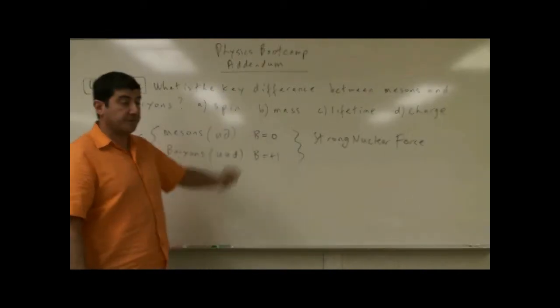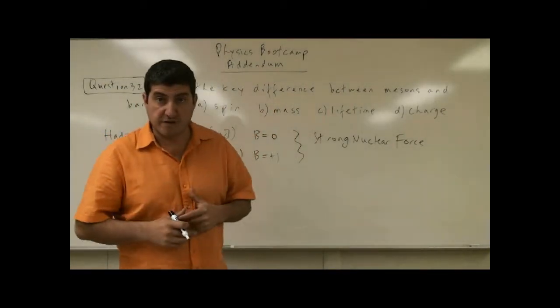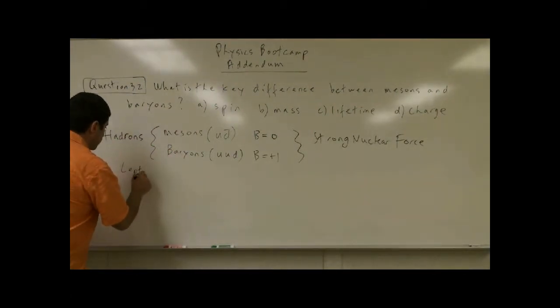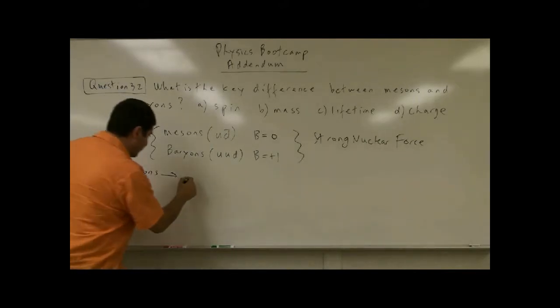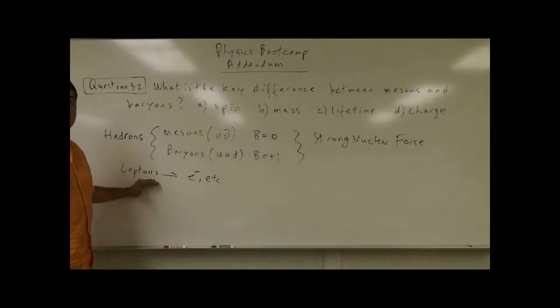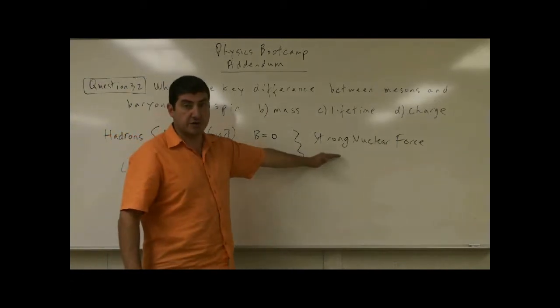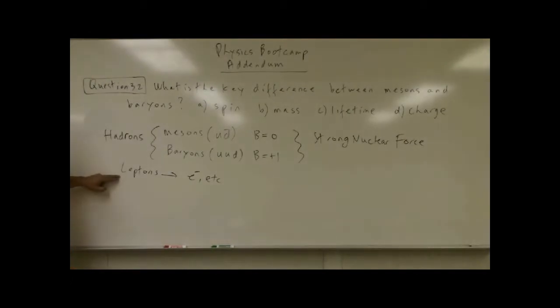The other form of matter, which we talked about, and it's a fundamental form of matter, are the leptons, which we said to remember is the electron and the neutrino and so on. Remember there were six of those. The leptons do not interact with each other with the strong nuclear force. They only interact with each other with the weak nuclear force. The weak nuclear force helps mediate interactions with both hadrons and leptons. So we can write here, weak nuclear force.